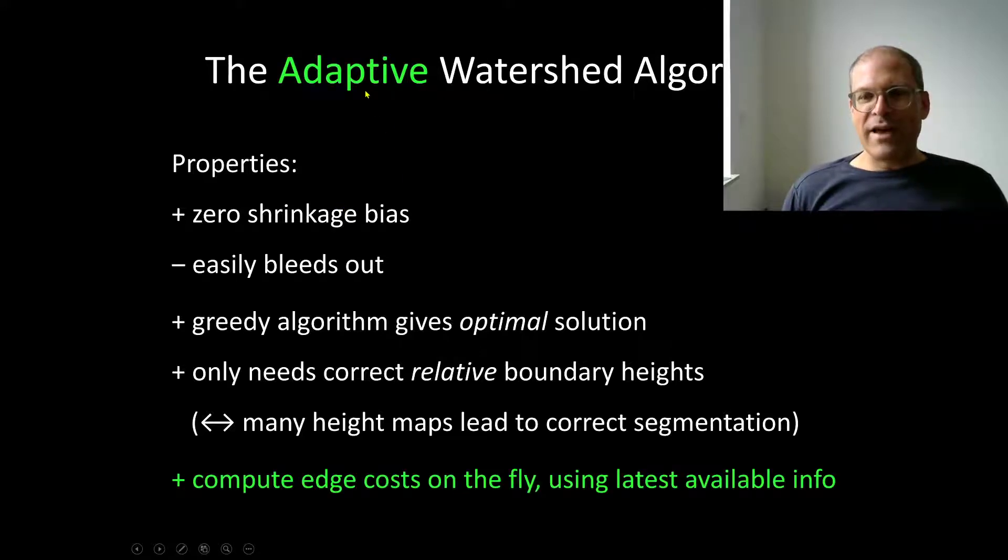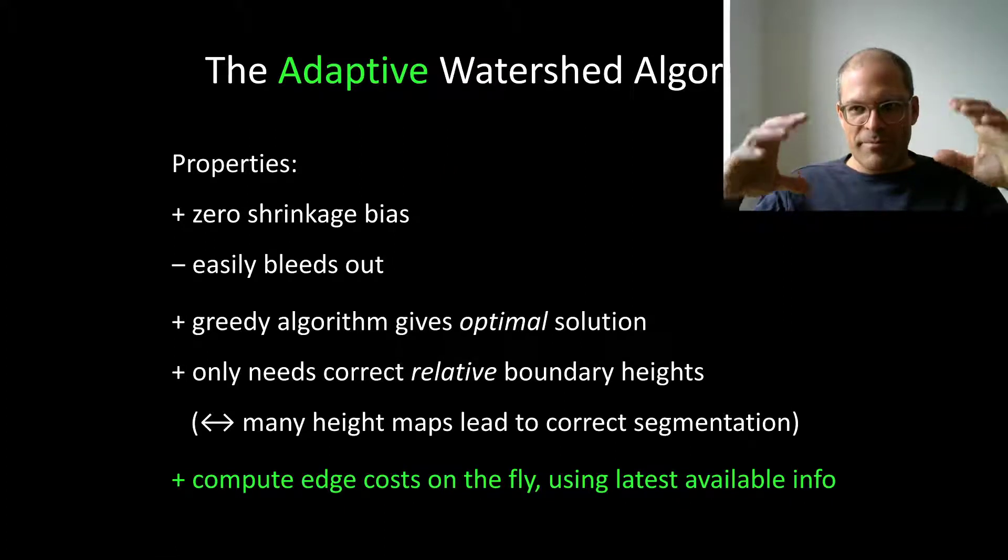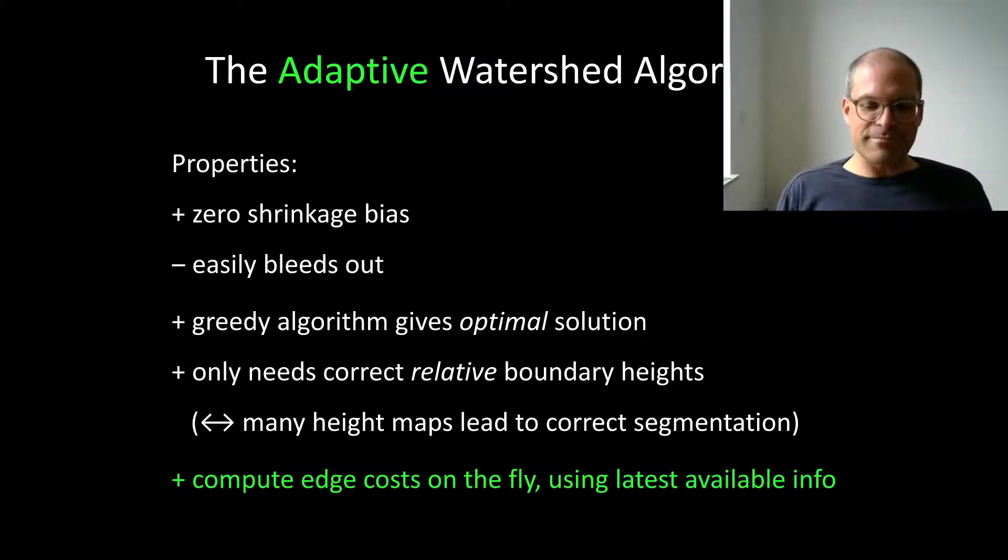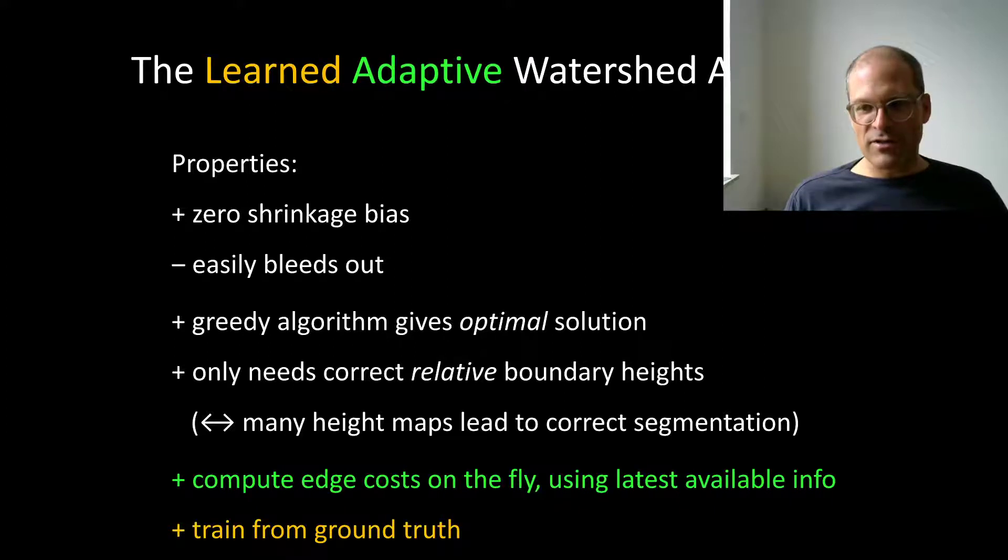Now, one can think about making this adaptive in the following sense. Previously I showed you how to grow a region from a seed. So because we grow a region from a seed, I do not at the outset need all edges in the whole image or the whole graph. I only ever need the edge weights that are at the boundary of my current segment as it grows further. And this means I can compute edge costs on the fly,